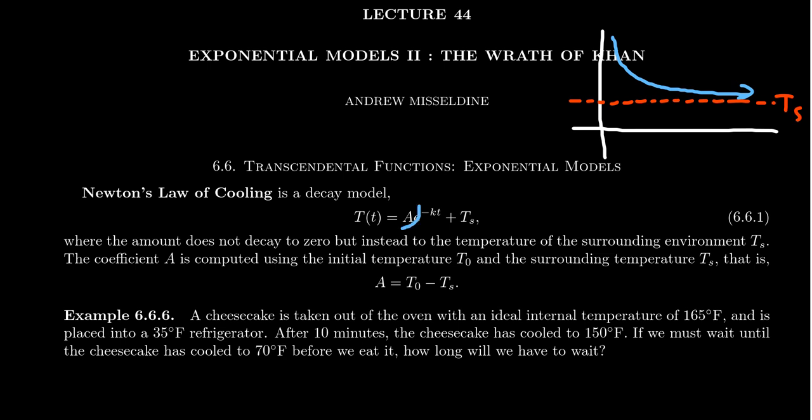And then what about this number A right here? This is the coefficient, and this coefficient is going to be the difference between T sub naught, which will be our initial temperature, and the surrounding temperature TS. As we tried to take the y-intercept, which is going to be T sub naught here, we take the difference between T naught and TS. That gives us this stretch value of A, the vertical stretch. We've done this as we try to graph exponential functions previously. So A is going to be the difference between the initial temperature and the surrounding temperature.